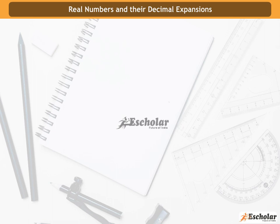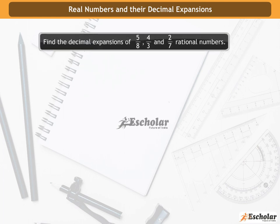Real numbers and their decimal expansions. Let us start with a few examples of rational numbers. Find the decimal expansions of 5 by 8, 4 by 3, and 2 by 7.